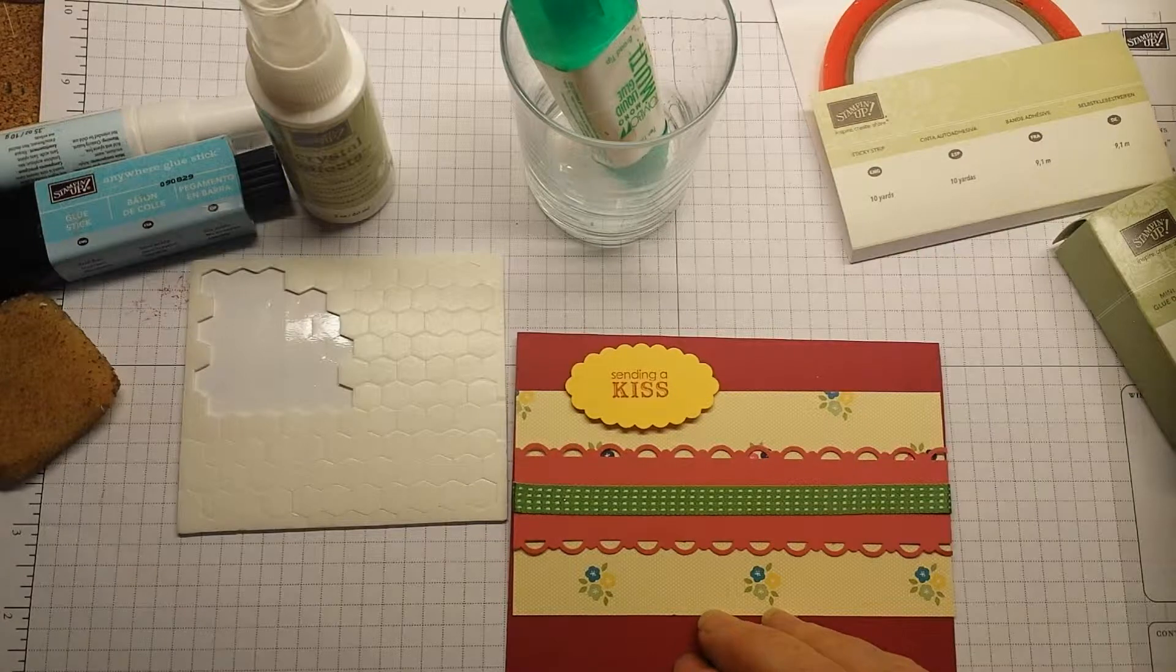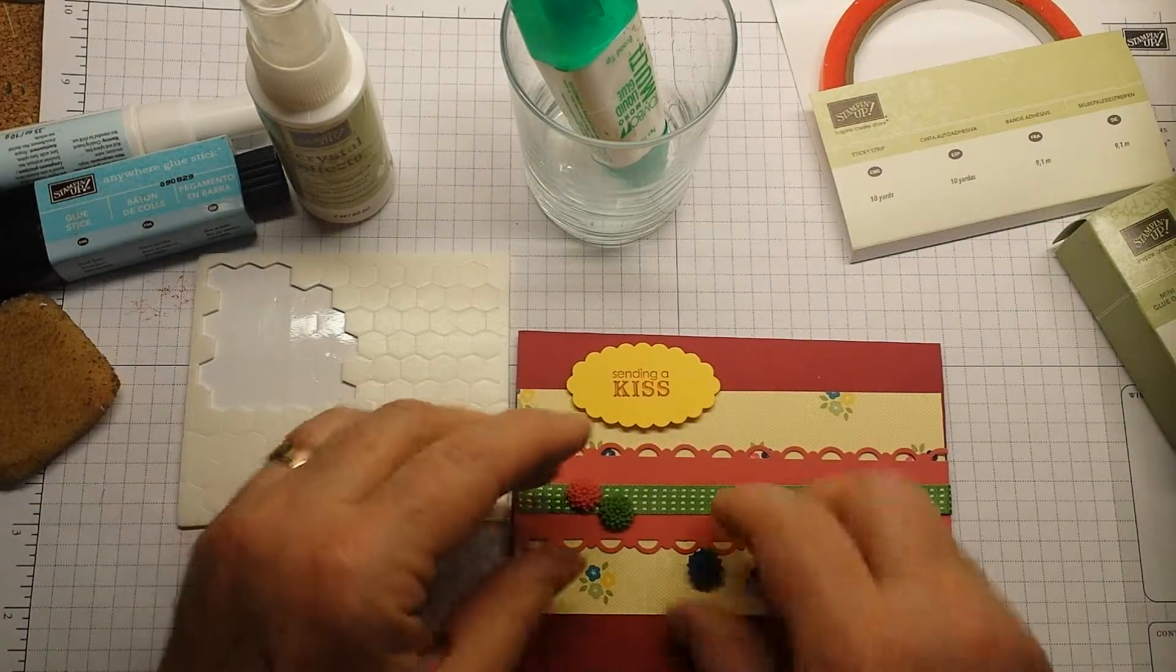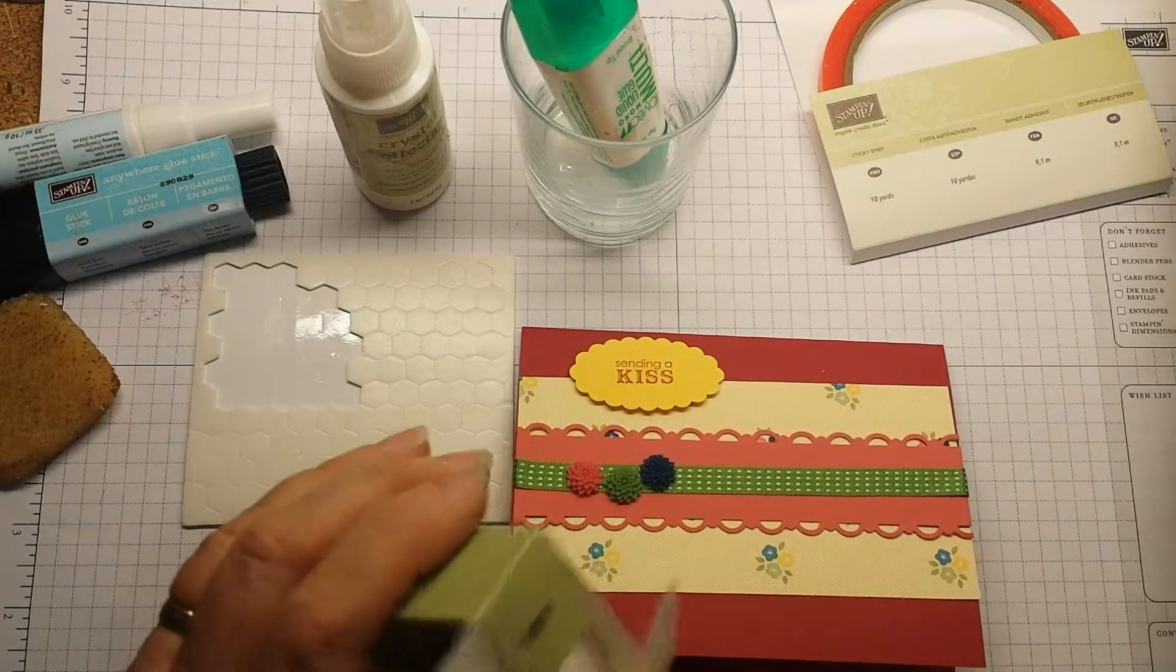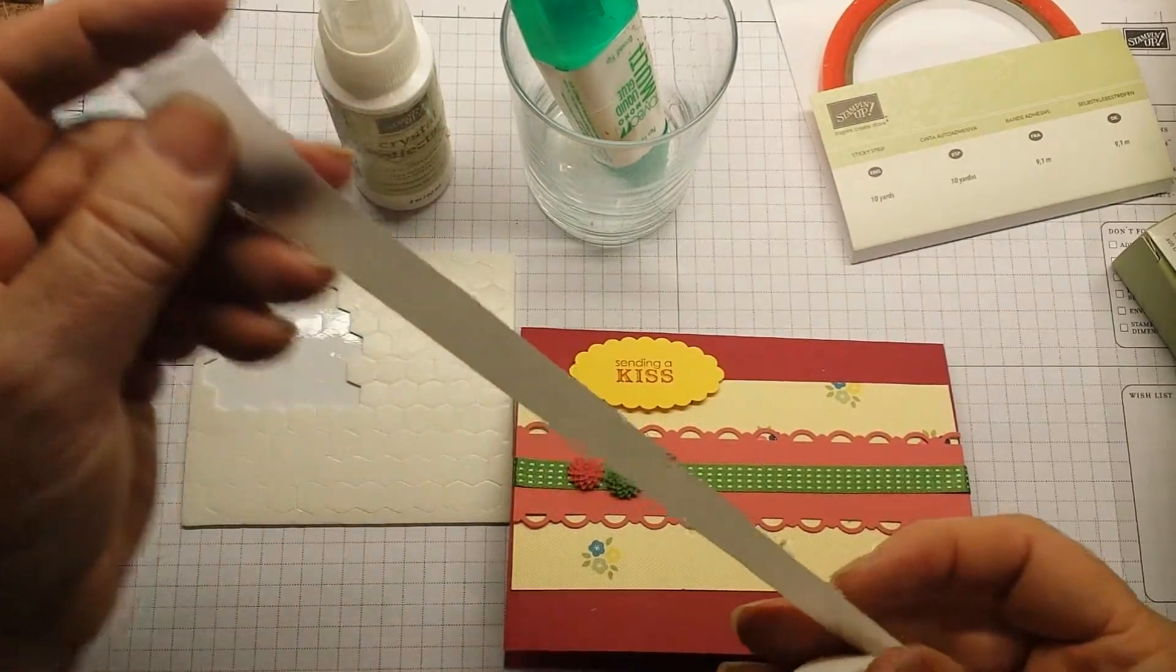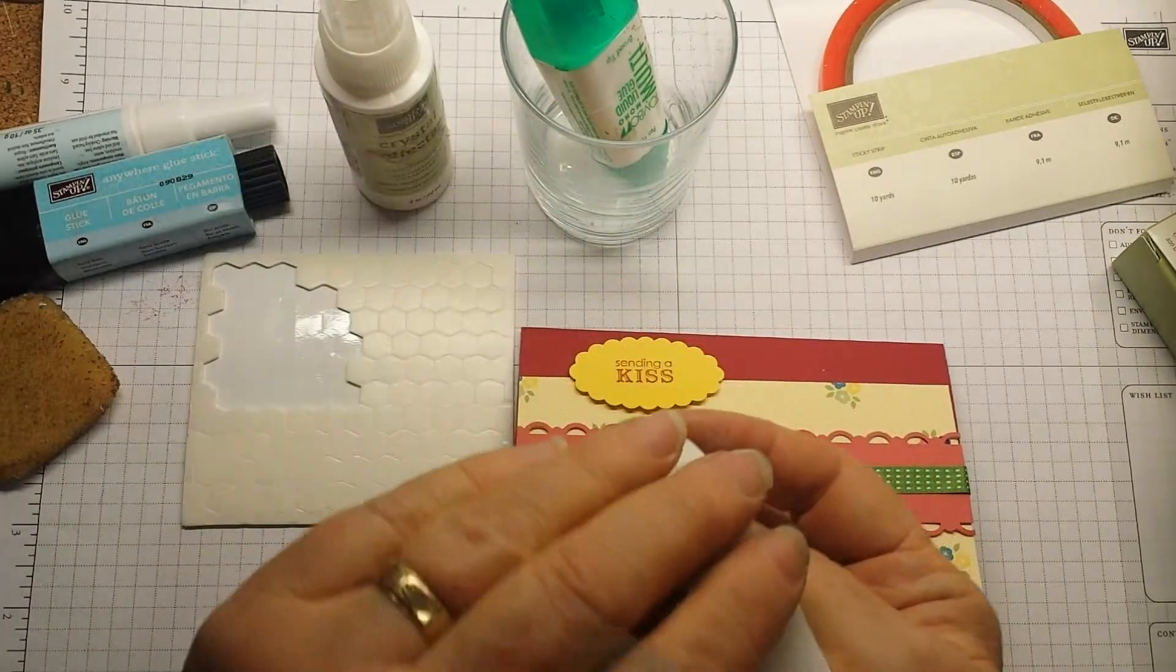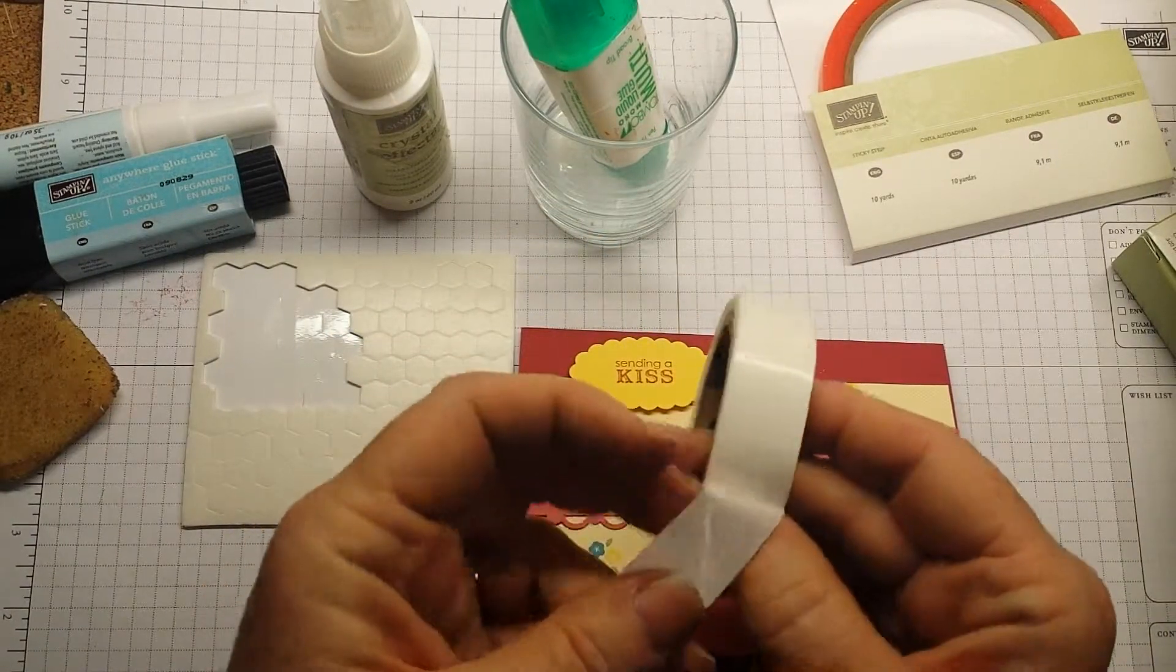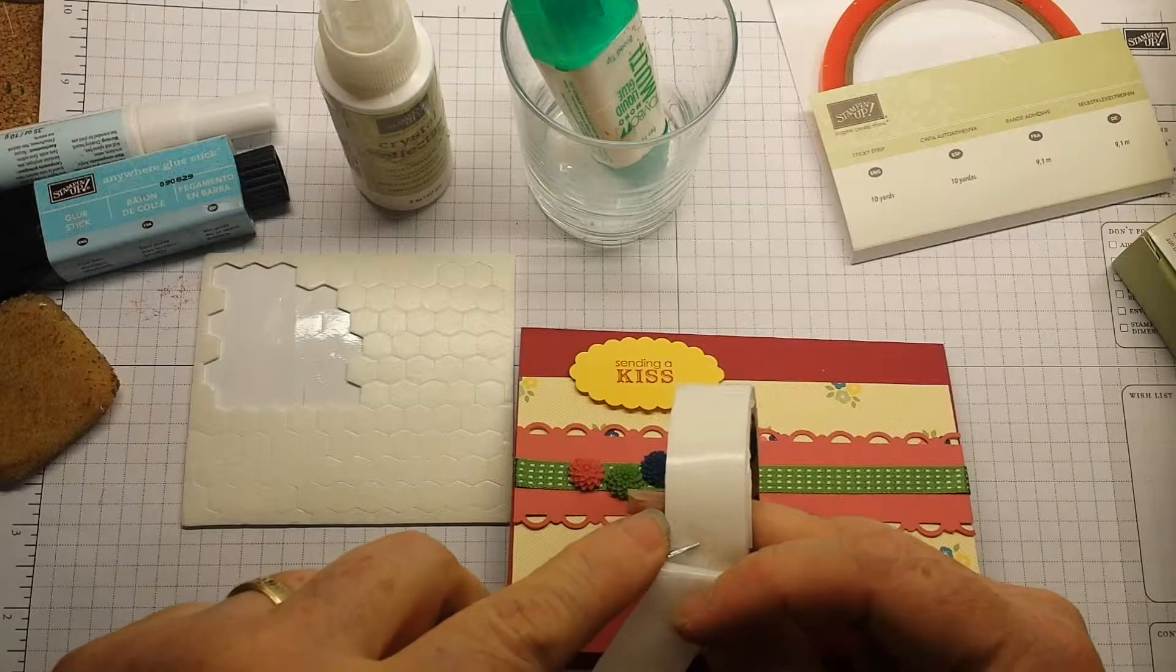If you want to glue something that is non-porous like these little dahlias, these in-color dahlias, you might want to use something like Crystal Effects or glue dots, the mini glue dots. I like to call these snot dots. My tip for glue dots is if you just look for a glue dot, you are going to end up with glue dots all over the place. So what I do is I keep them all closed up. And then I pull back my tape a little bit at a time until I find the next glue dot.